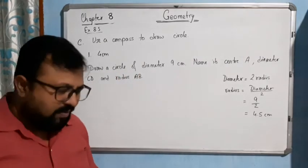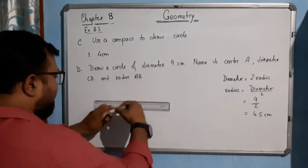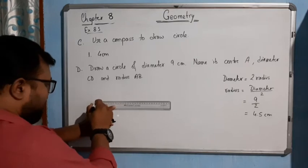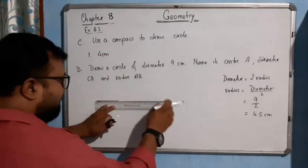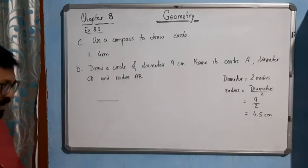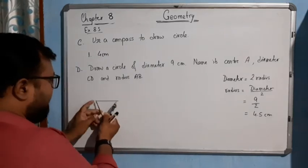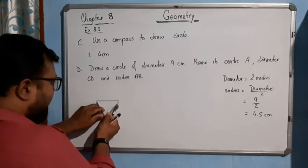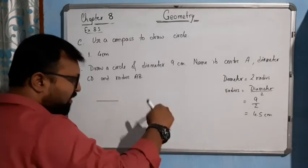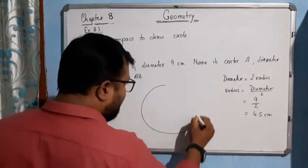Then what you will do? You will place your scale on the paper, you will draw a line. Suppose here, this is 4, suppose this is 4.5 centimeter. 4.5 centimeter, you will measure it with the help of compass, 4.5 centimeter. And then you will try to draw the circle. So suppose it will look like this, this is your circle.